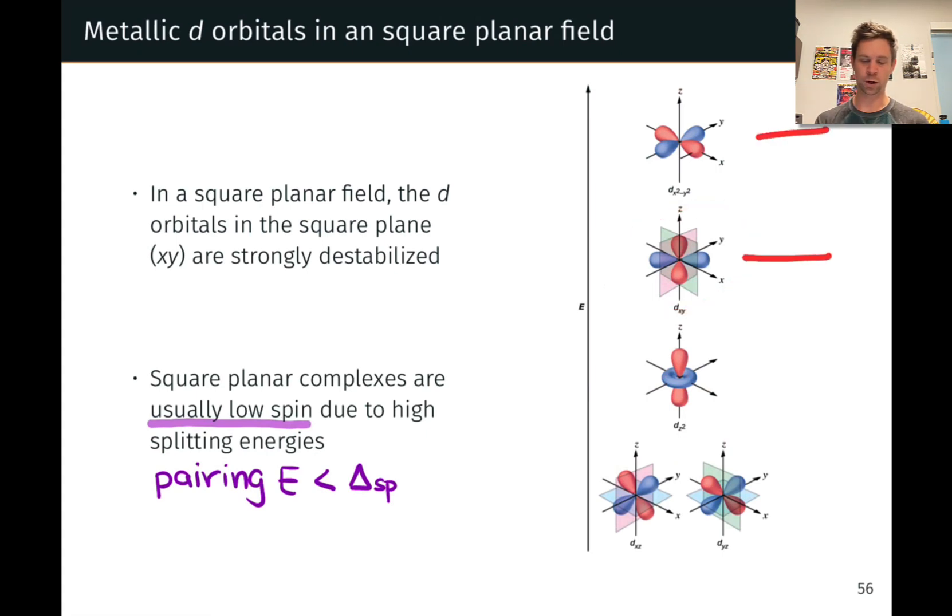So we get this pattern of one, one, one, and two energy levels in the square planar crystal field splitting. And in this case, the crystal field splitting is relatively large. So the pairing energy is pretty reliably less than the crystal field splitting for the square planar geometry, which I've called here Δsp. So square planar complexes are usually low spin.